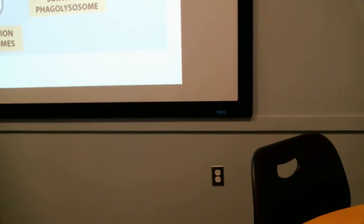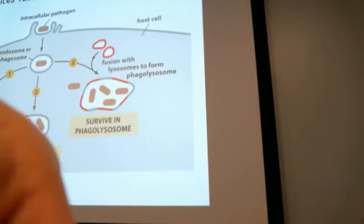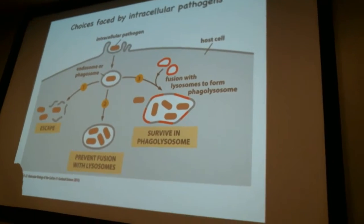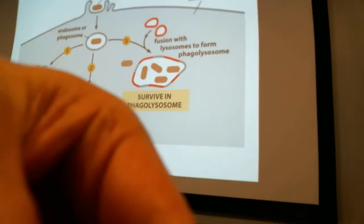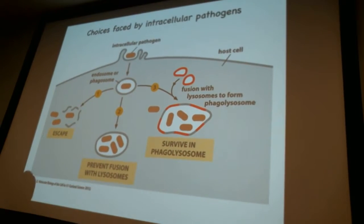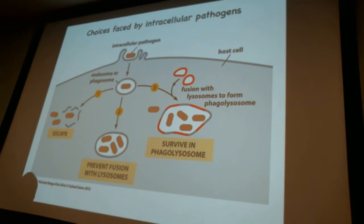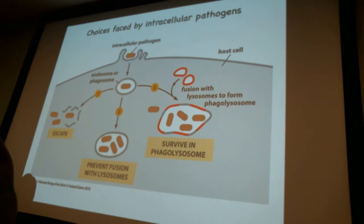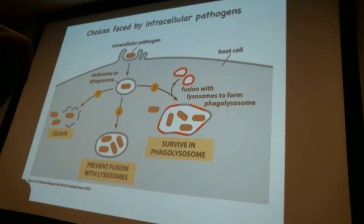There are classes of pathogens that we don't fully understand yet, but they manage to survive in the mature phagolysosome. I'll show you an example of a pleurozoan parasite we worked with in my lab, in which this parasite actually replicates its whole intracellular cycle inside a mature lysosome. It's still not completely understood how they do this — they probably secrete inhibitors of enzymes, but this is something still being investigated.